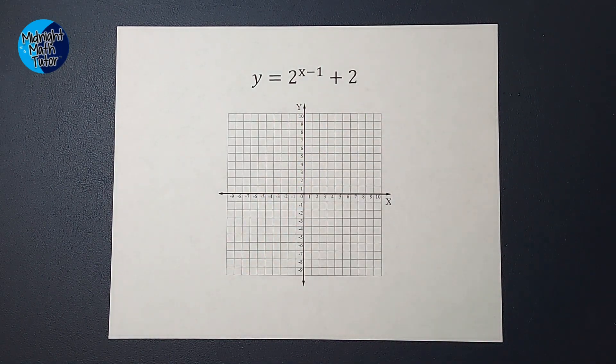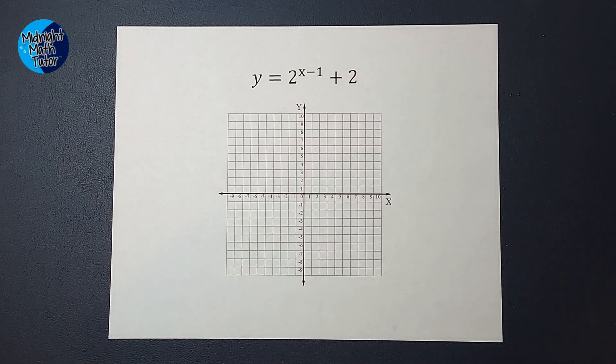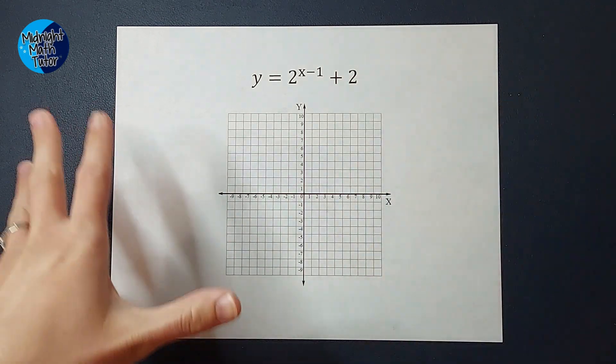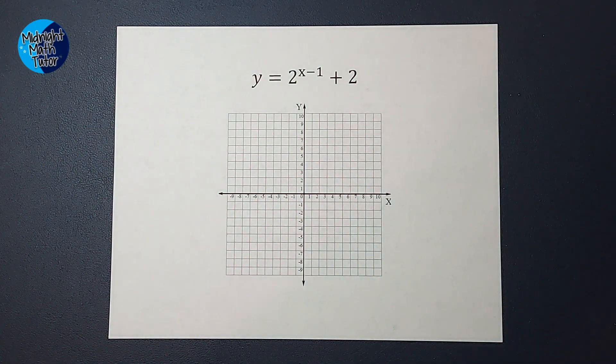So if you've been doing parabolas, absolute value, square root graphs, you've probably been doing your parent graph and shifting it around. This is the same thing.